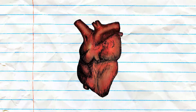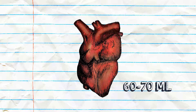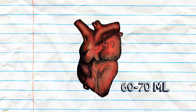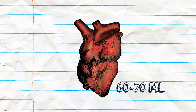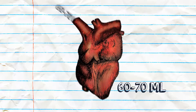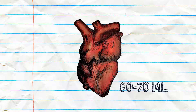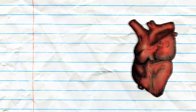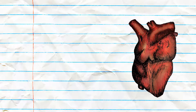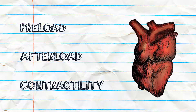The normal level of stroke volume is around 60–70 milliliters, meaning our heart pumps out 60–70 milliliters of blood with each beat or contraction. There are three clinical factors contributing to stroke volume: preload, afterload, and contractility.